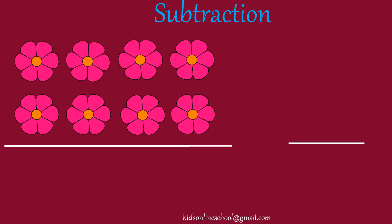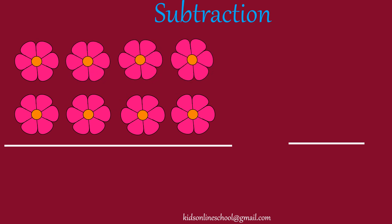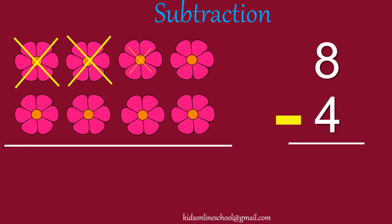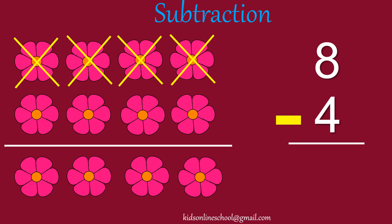1, 2, 3, 4, 5, 6, 7, 8. 8 flowers. Take away 4 flowers. Let's start counting: 1, 2, 3, 4. How many flowers left? 1, 2, 3, 4. 4 flowers.